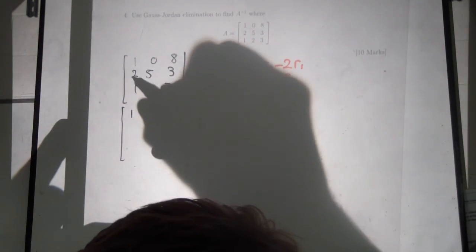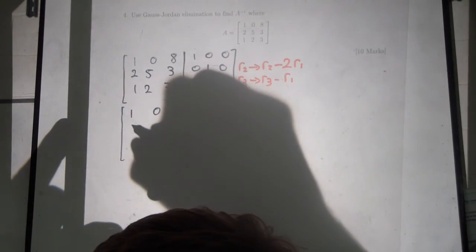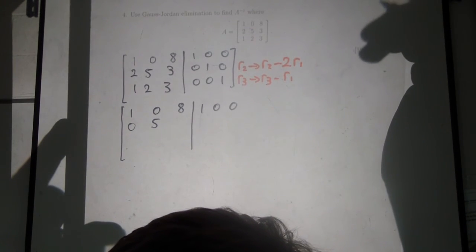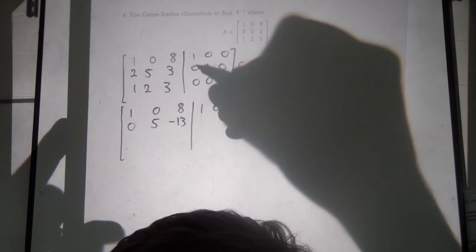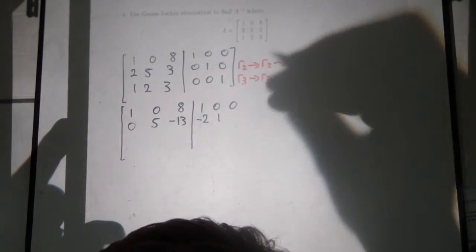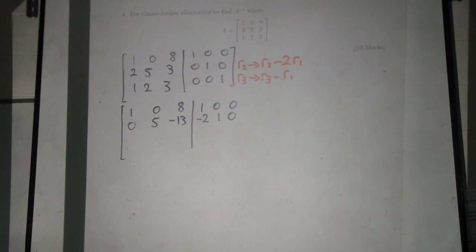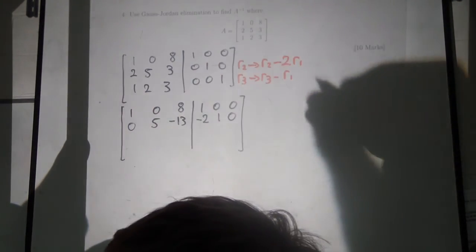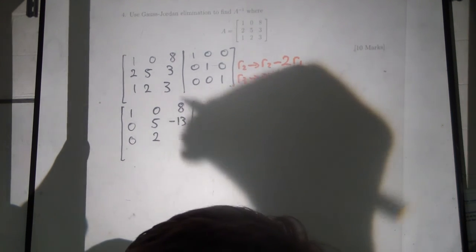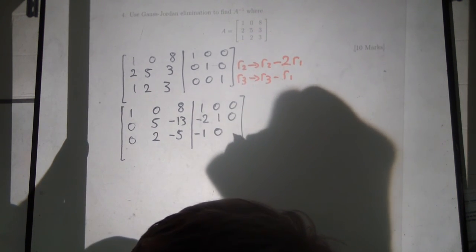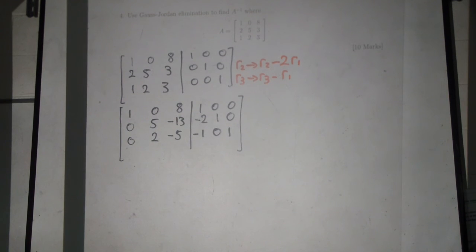The first row is fine for now: 1, 0, 8, 1, 0, 0. Row 2 minus twice row 1: 2 minus 2 is 0; 5 minus 0 is 5; 3 minus 16 is minus 13; 0 minus 2 is minus 2; 1 minus 0 is 1; 0 minus 0 is 0. Row 3 minus row 1: 1 minus 1 is 0; 2 minus 0 is 2; 3 minus 8 is minus 5; 0 minus 1 is minus 1; 0 minus 0 is 0; 1 minus 0 is 1.